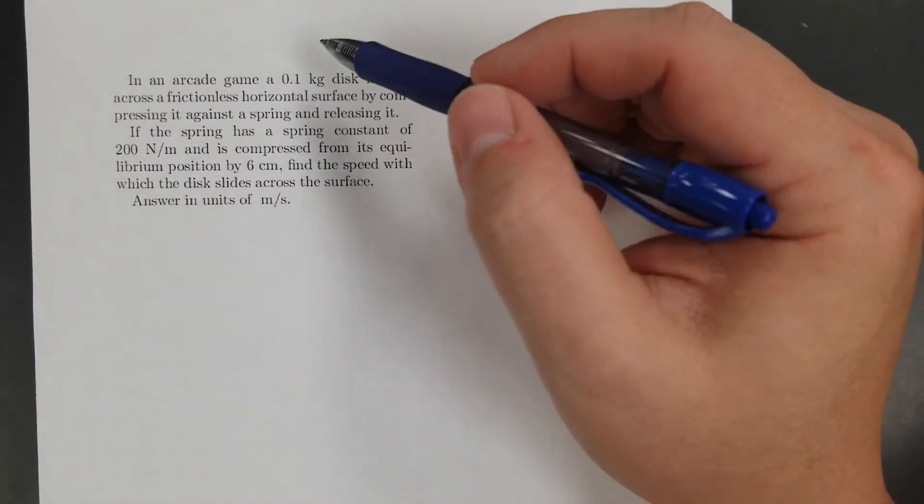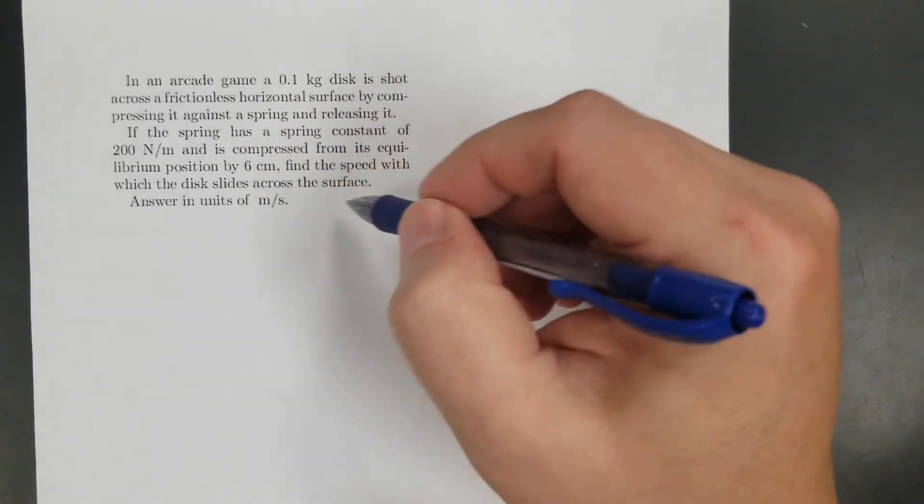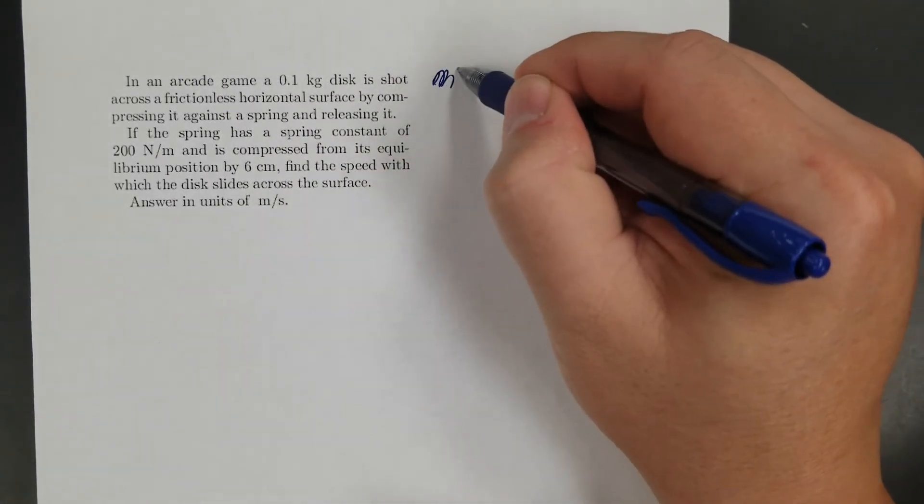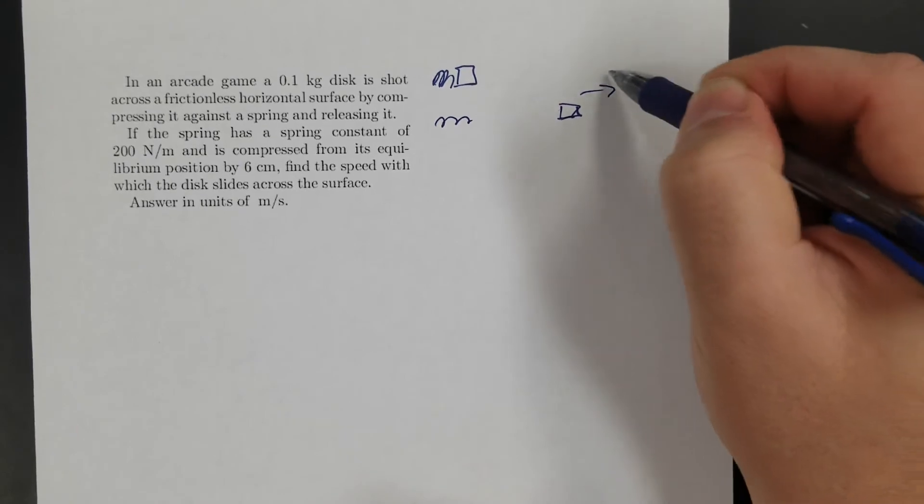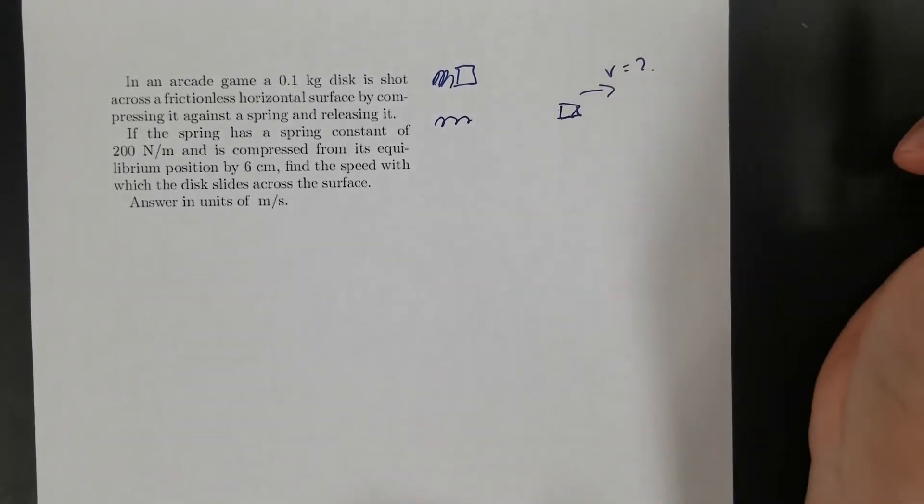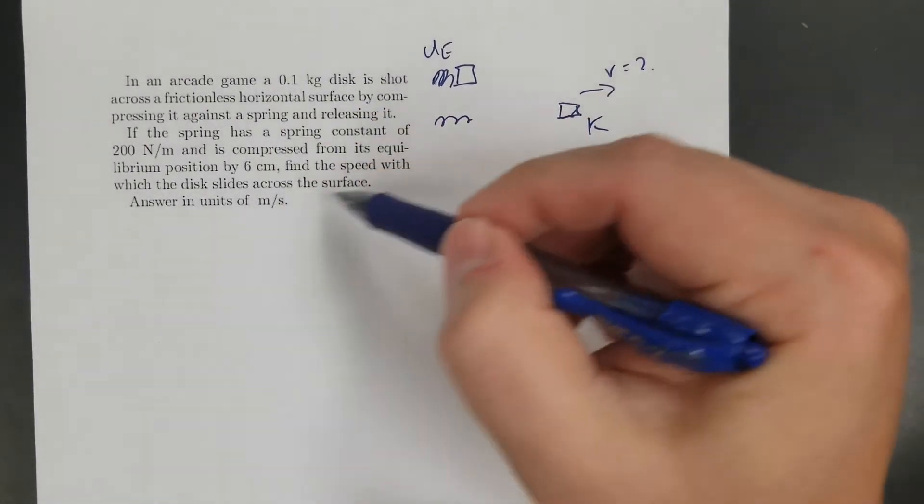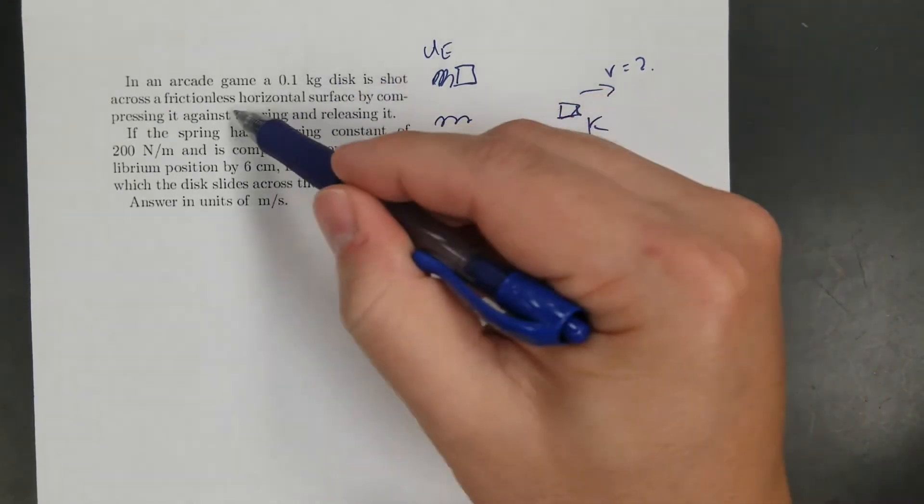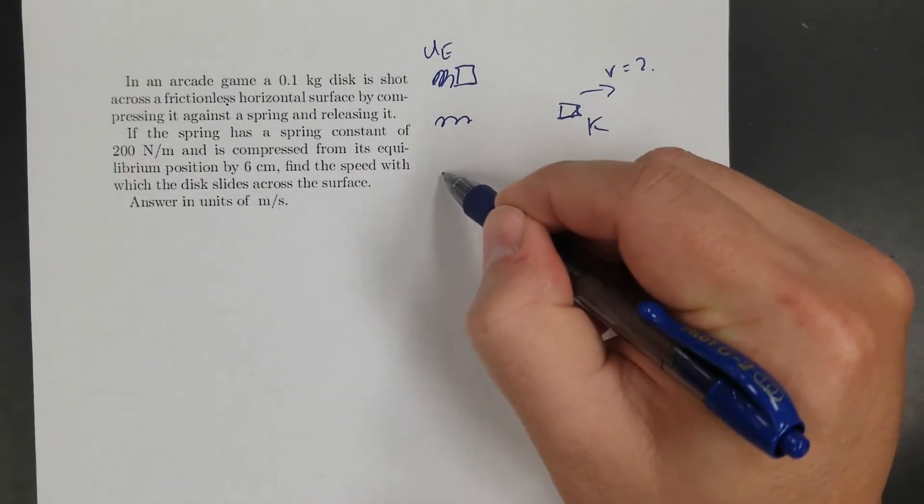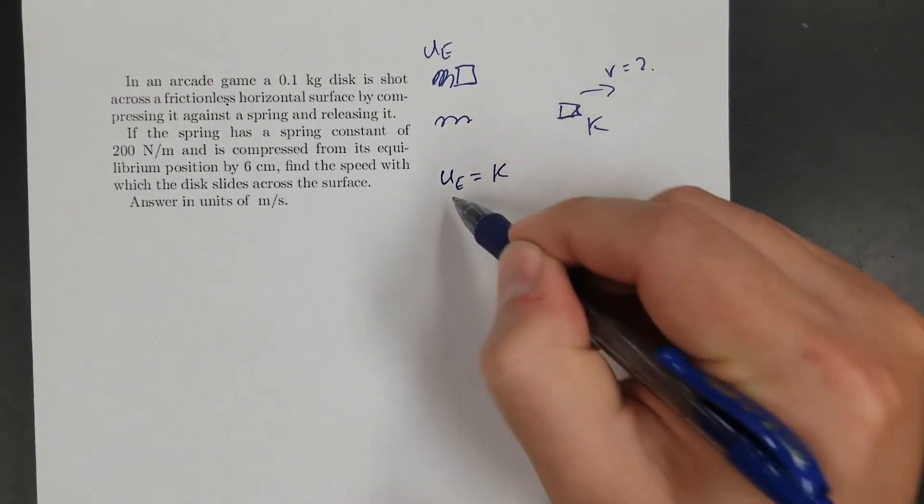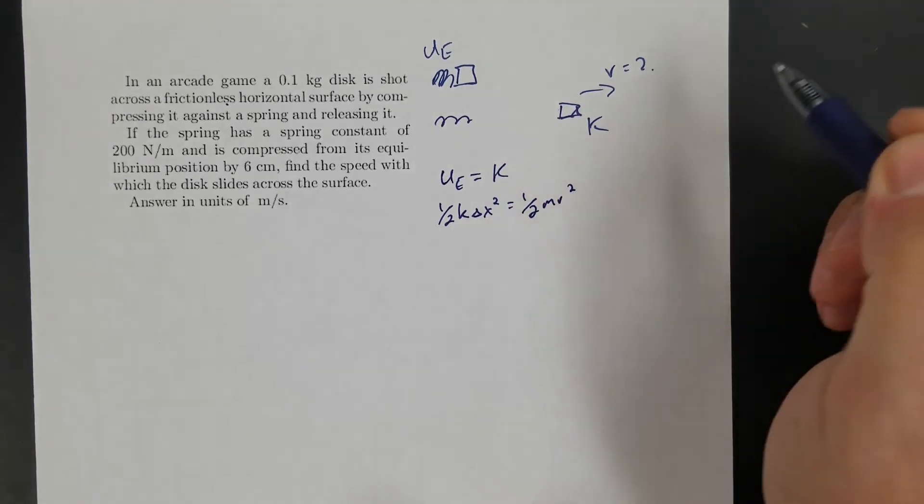One more problem. In an arcade game, a 0.1 kilogram disc is shot across a frictionless surface by compressing a spring with spring constant of 200. I'm trying to find the final velocity. I got this thing squished up against the spring, and then the spring is going to release and shoot this thing that way. I want to know how fast it's going. So it's going from elastic potential energy to kinetic. Does it say frictionless? Yes, frictionless. Got to check for that - sometimes they throw you off.